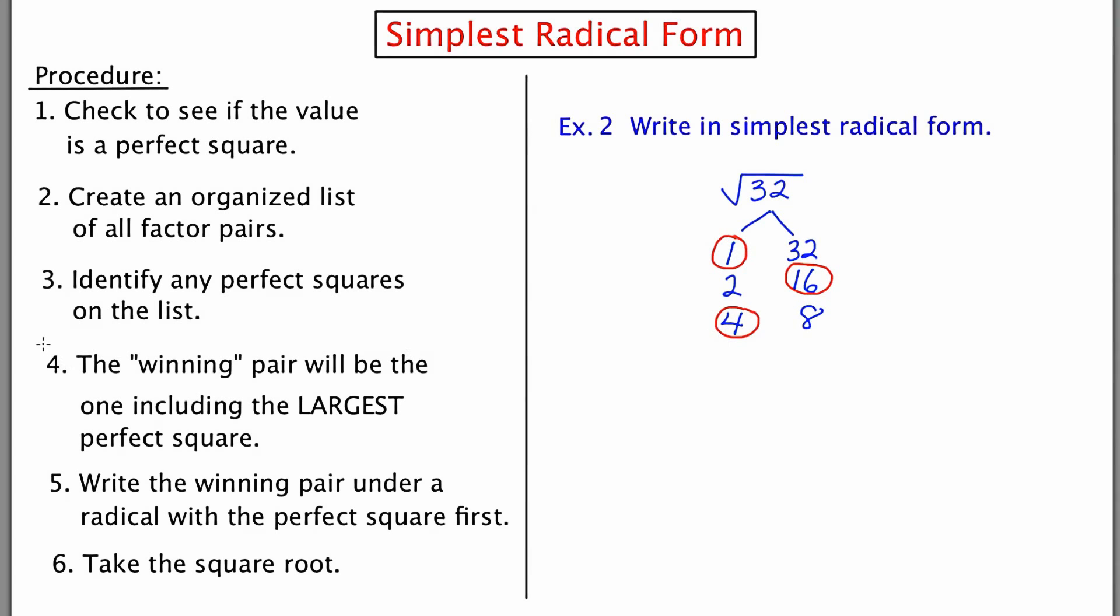In step 4, you're to identify the winning pair, which is the one that includes the largest perfect square. In this case, that's going to be 2 times 16, because 16 is the largest. When I rewrite the radical, I like to put the perfect square first, so I'm going to say 16 times 2. The square root of 16 is 4, and the square root of 2 can't be broken down, so I leave that as root 2. So the final answer is 4 root 2.